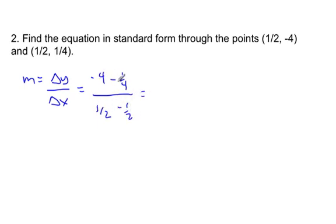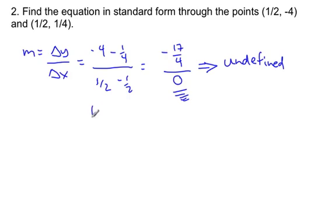Well, 1/4 minus 1/4, well that's -4 and 1/4, which is -17/4. 1/2 minus 1/2 is 0. Oh, we have a problem here. This value is undefined. We cannot divide by 0. So, hmm, that tells me a couple things. I remember what those equations look like, but if you're not quite so sure, let's do a quick little sketch of this. Here's my x, y axis. If I take this first point, I'm going to go, here's 1, I'm going to go 1/2, -4. 1, 2, 3, 4. So here is (1/2, -4).